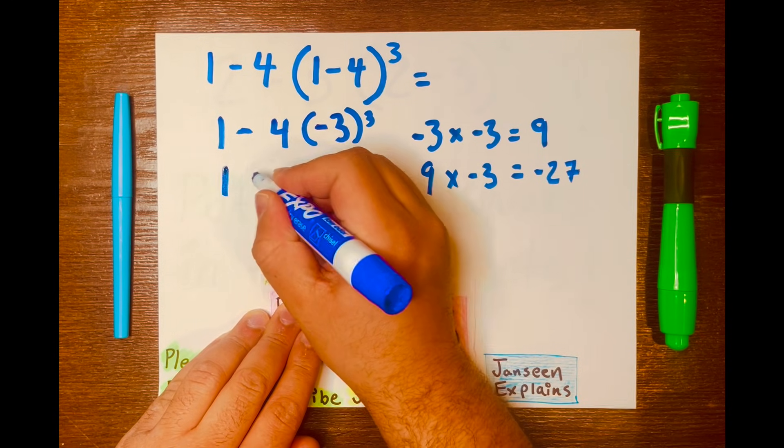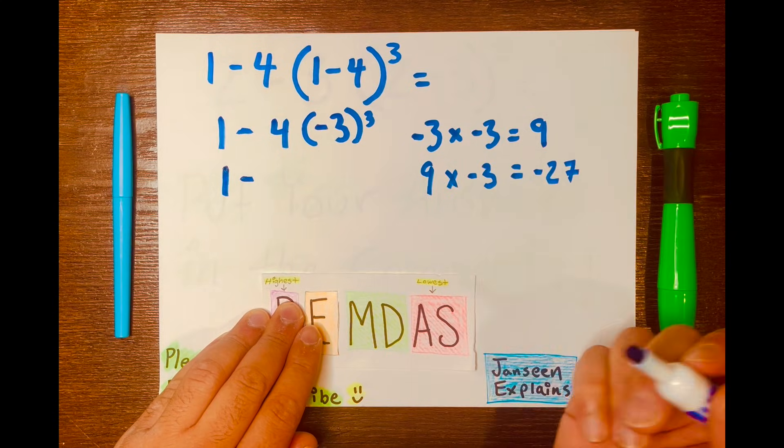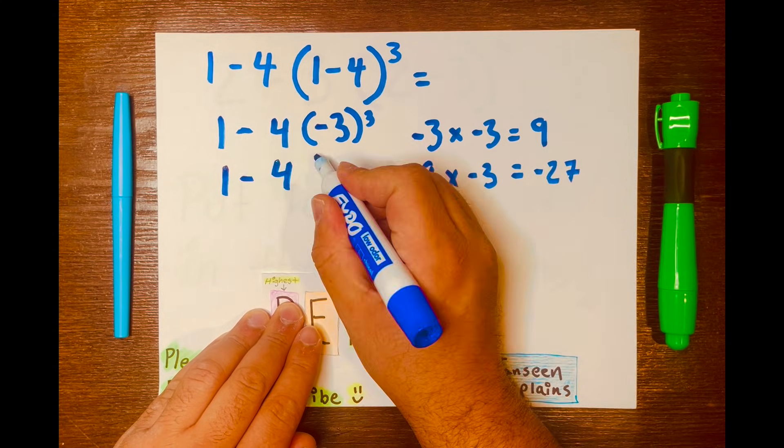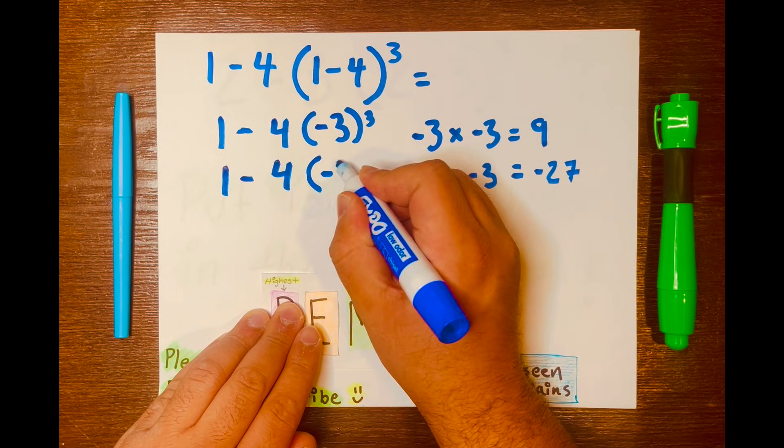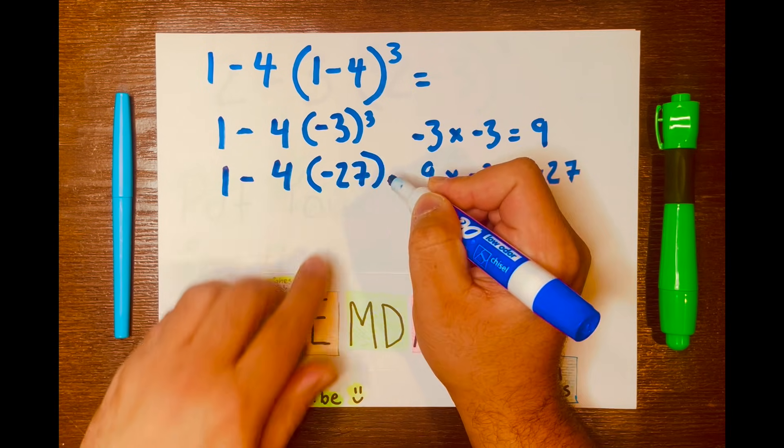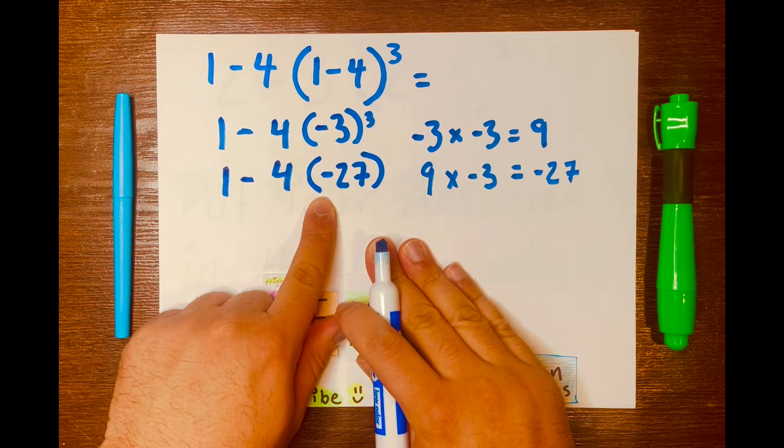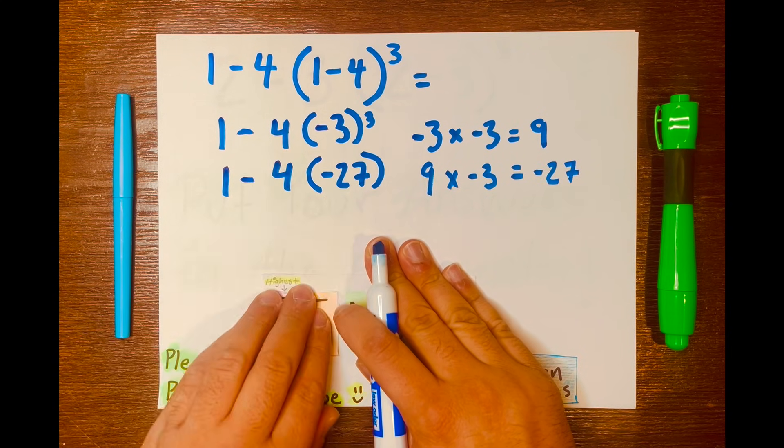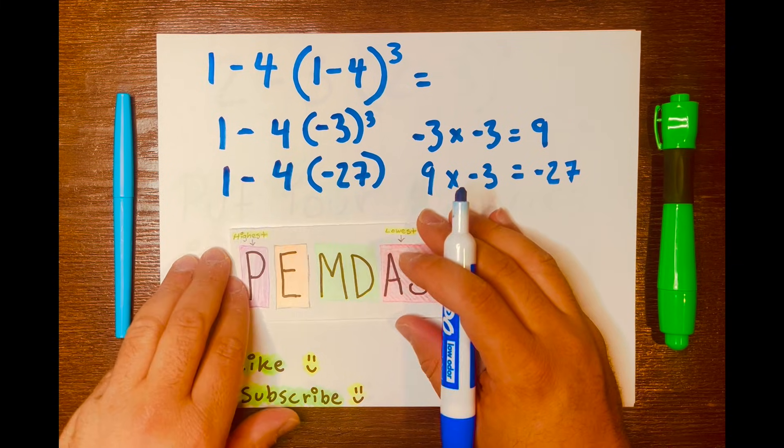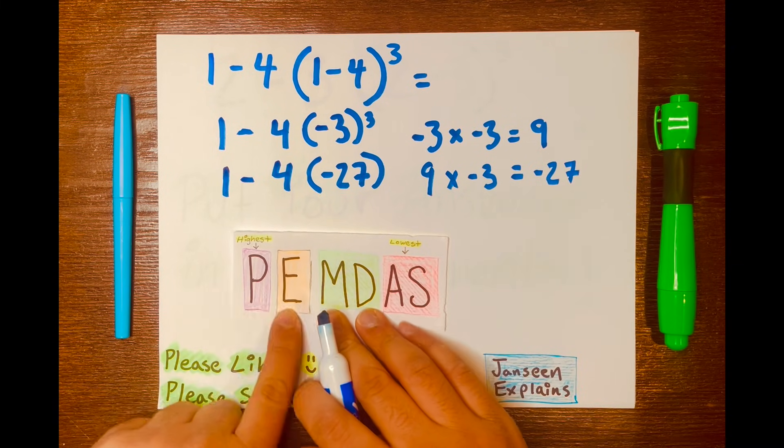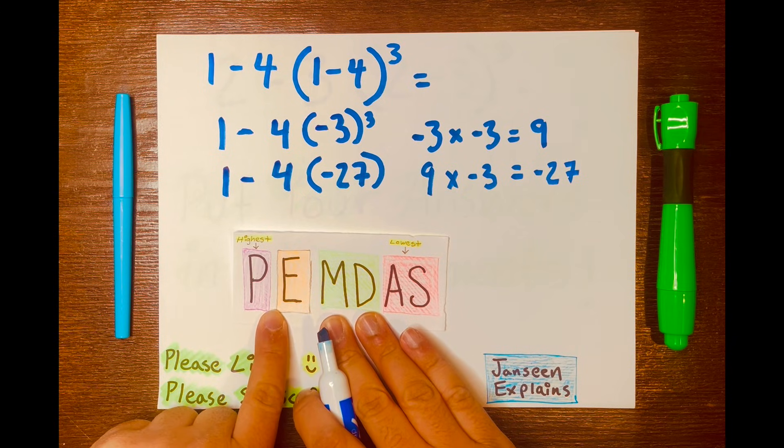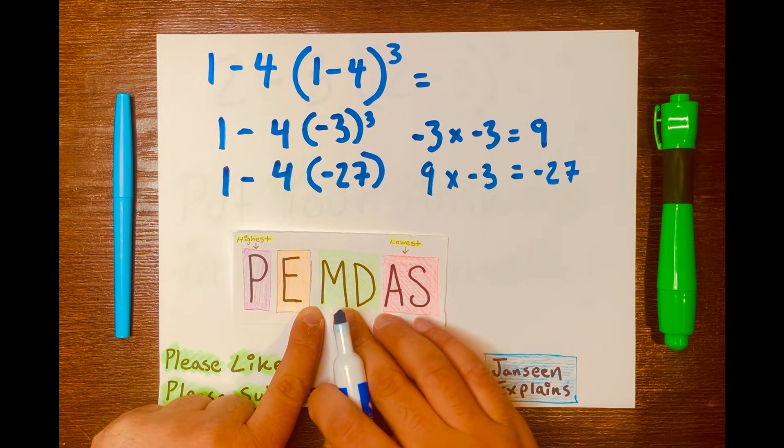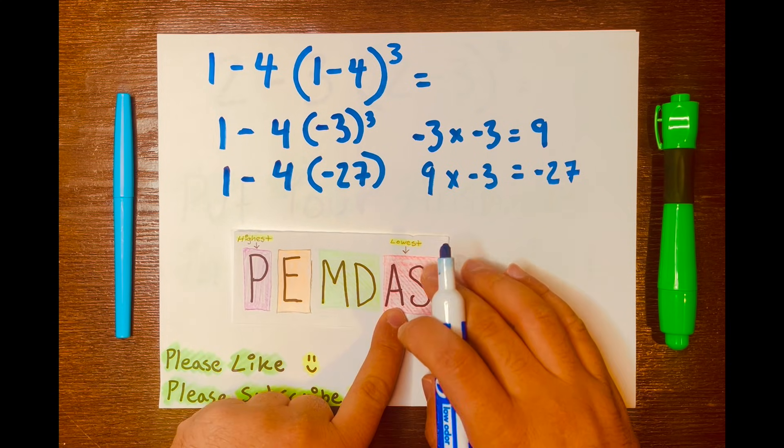So I'll write 1 minus 4, then negative 27 inside the parentheses. Now we have 1 minus 4 times negative 27. And looking at PEMDAS, it's telling us to multiply first, not subtract, because it's the lowest level.